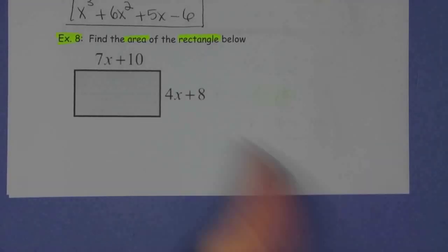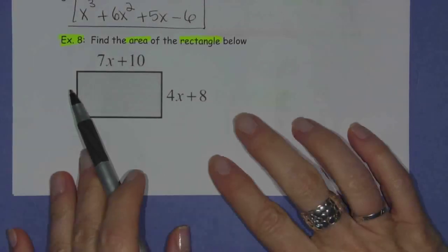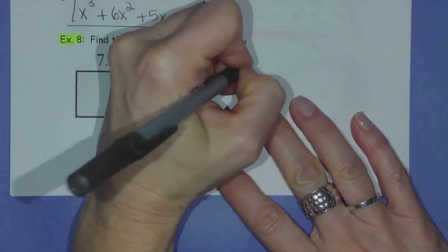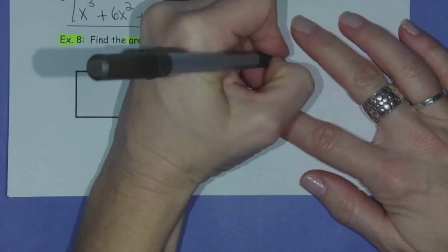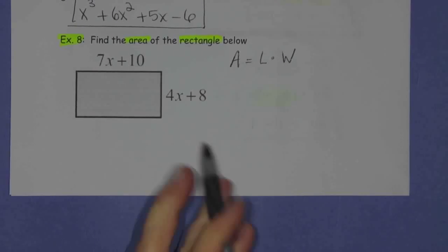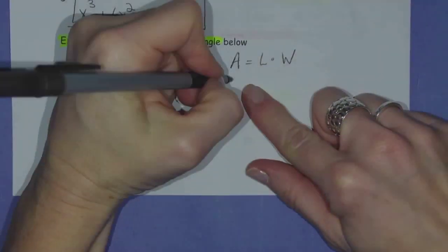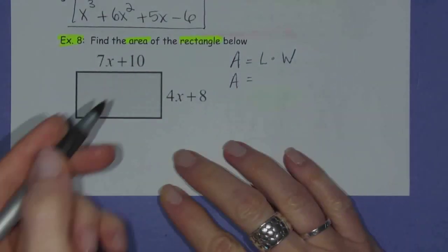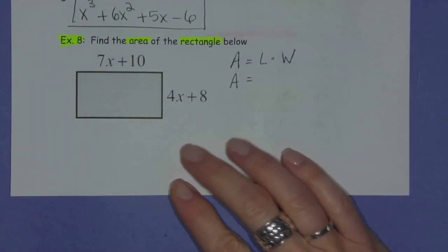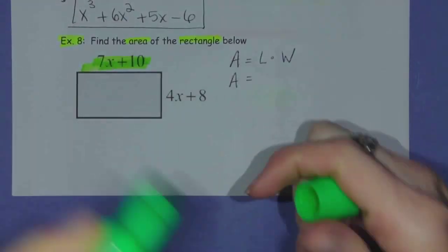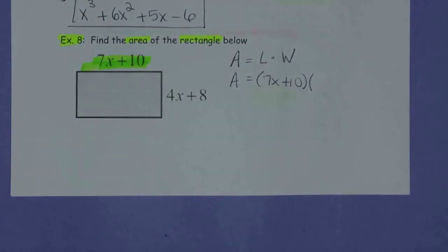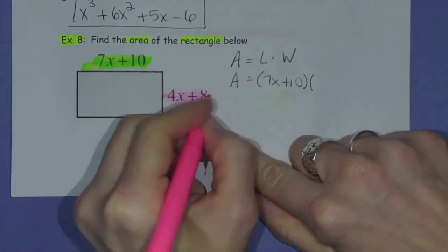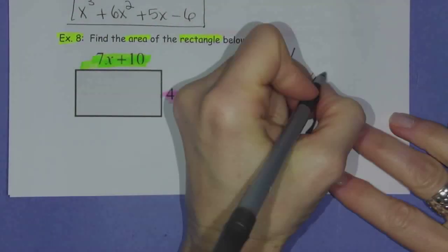Here's the correct answer for finding the area of this rectangle. You have to know from the start that the formula for area of a rectangle is length times width. Filling in what we know, we're looking for area, so we'll keep that as A. The length of the rectangle is 7x plus 10, and the width is 4x plus 8.